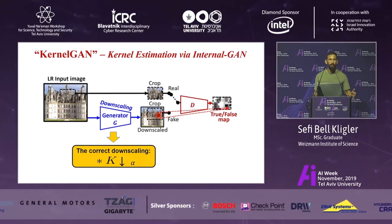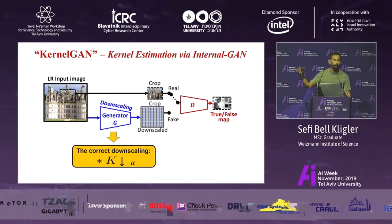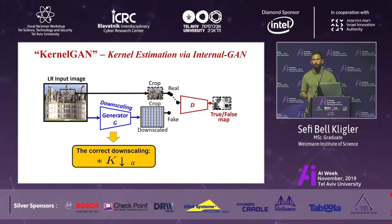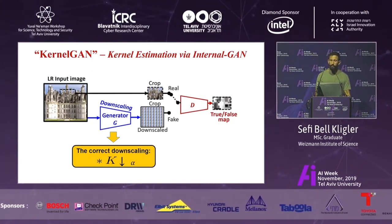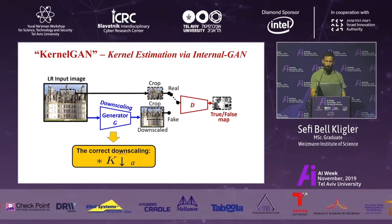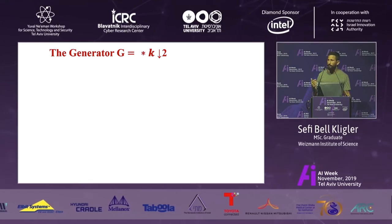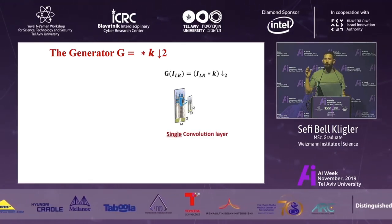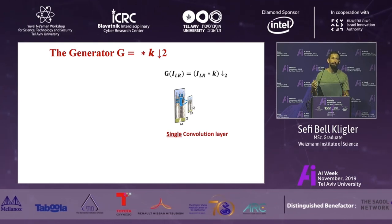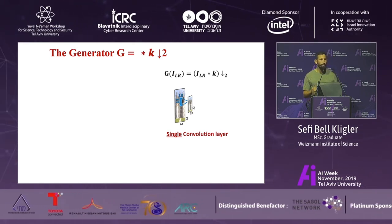If we plug a standard neural network into the generator, rather than downscaling we get the generator memorizing patches from the input image and just outputting them to the discriminator, fooling it by outputting crops from the input image. But we're trying to model a linear downscaling — a convolution with a single kernel and downsampling — which a standard neural network is far more expressive than needed. The intuitive question is: why not use a linear model? We took a single-layer convolutional network, plugged it into the generator, trained on many different kernels and images, but the results were far from accurate.